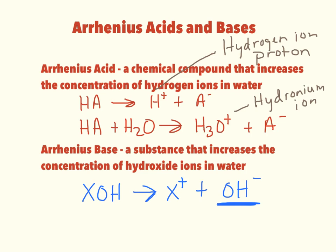Arrhenius did all this work, wrote a paper, and presented it — and they pretty much gave him a D on the paper. It wasn't until later that they realized it worked well for many things. It did have to be modified a bit for acids and bases because it didn't work in all situations. But just so you know — if you get a bad grade on something, don't give up. Keep on going. Maybe you'll even have your name, like Arrhenius, put on the front of something later on.